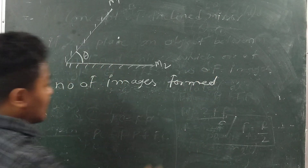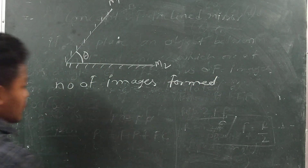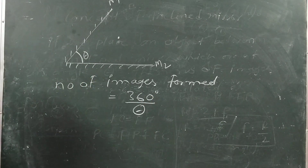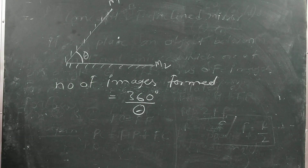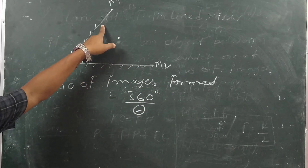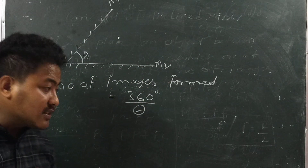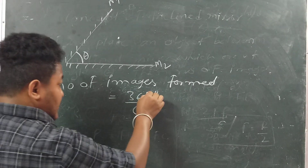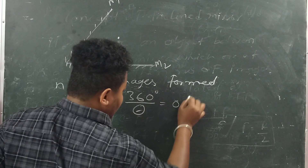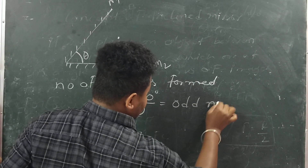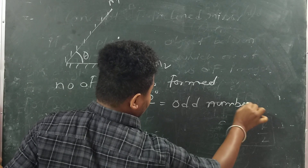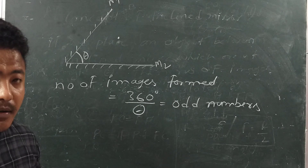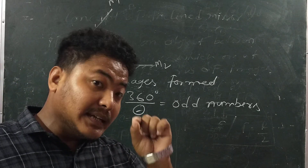The number of images formed is equal to 360 degrees divided by theta. This is the formula. The number of images formed in such a situation is calculated as 360 by theta. If 360 by theta gives an odd number, then that result itself is the number of images formed.